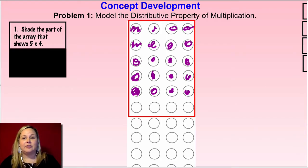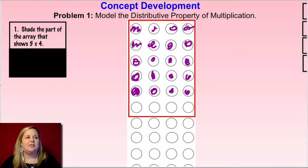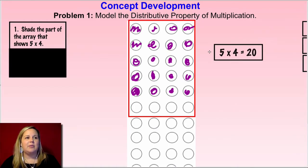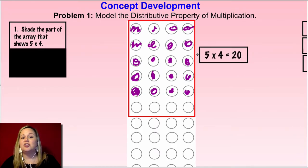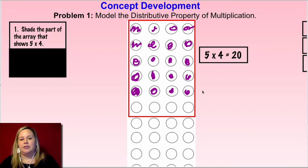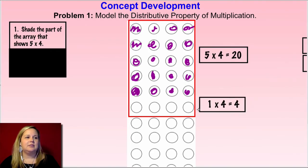Now I'd like you to label each part of the array — come up with an expression that matches each part. For the first shaded part, the multiplication expression is five times four. Now you need to come up with what matches your unshaded part of your array. If you need more time, click pause. One times four matches my unshaded part.